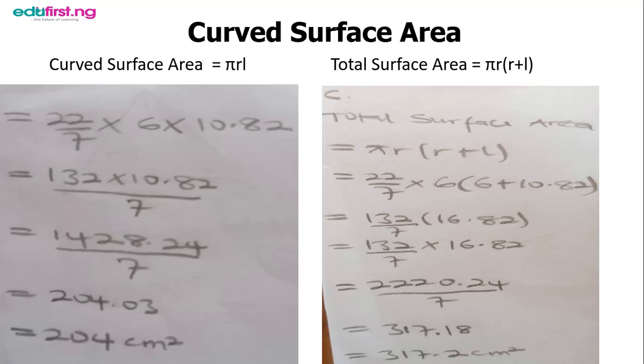By the time you multiply, you have 2,220.24 divided by 7, which gives 317.18. If you approximate to one decimal point, you have 317.2 centimeter squared.